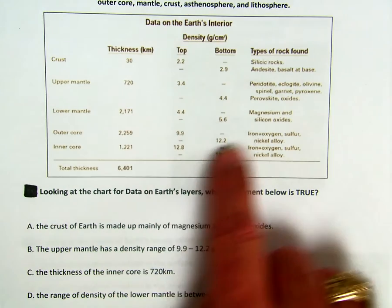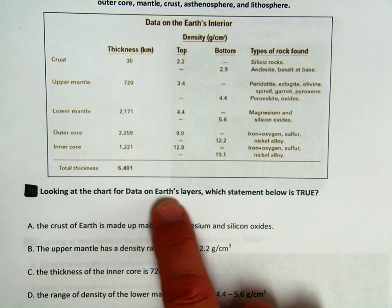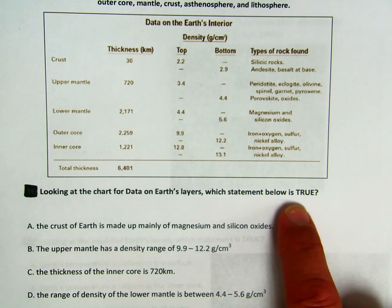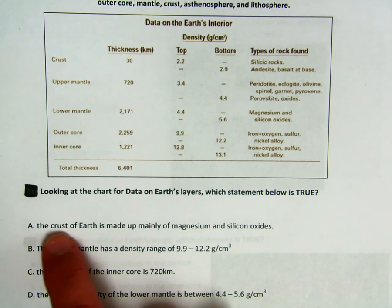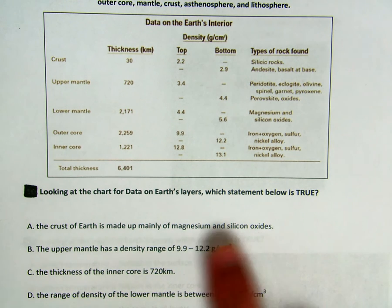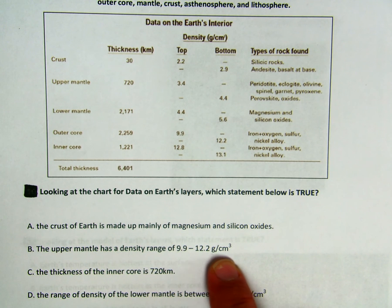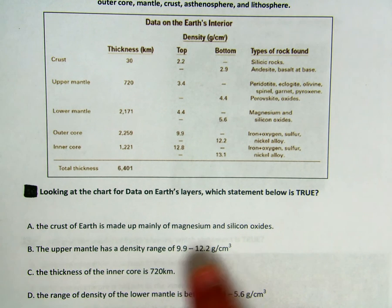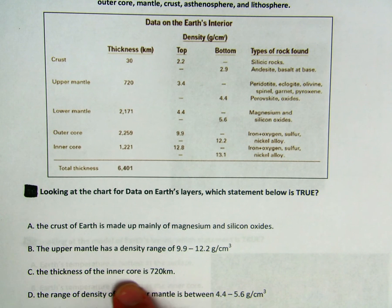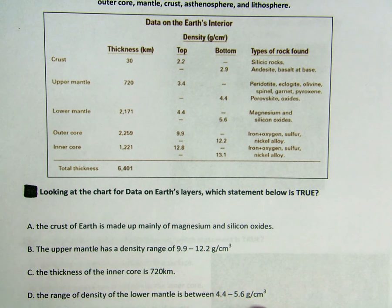Take a good look at your information here on your data. Looking at the chart for data on Earth's layers, which statement below is true? Is it A, the crust of Earth is made up mainly of magnesium and silicon oxides? B, the upper mantle has a density range of 9.9 to 12.2 grams per centimeter cubed? C, the thickness of the inner core is 720 kilometers? Or D, the range of density of the lower mantle is between 4.4 and 5.6 grams per centimeter cubed?